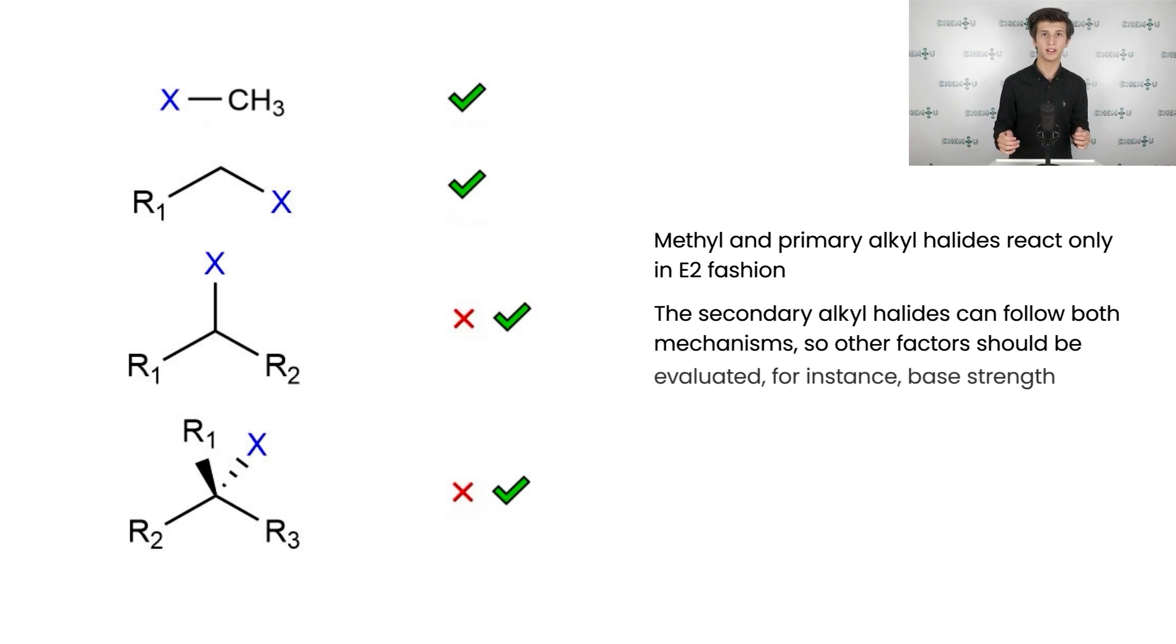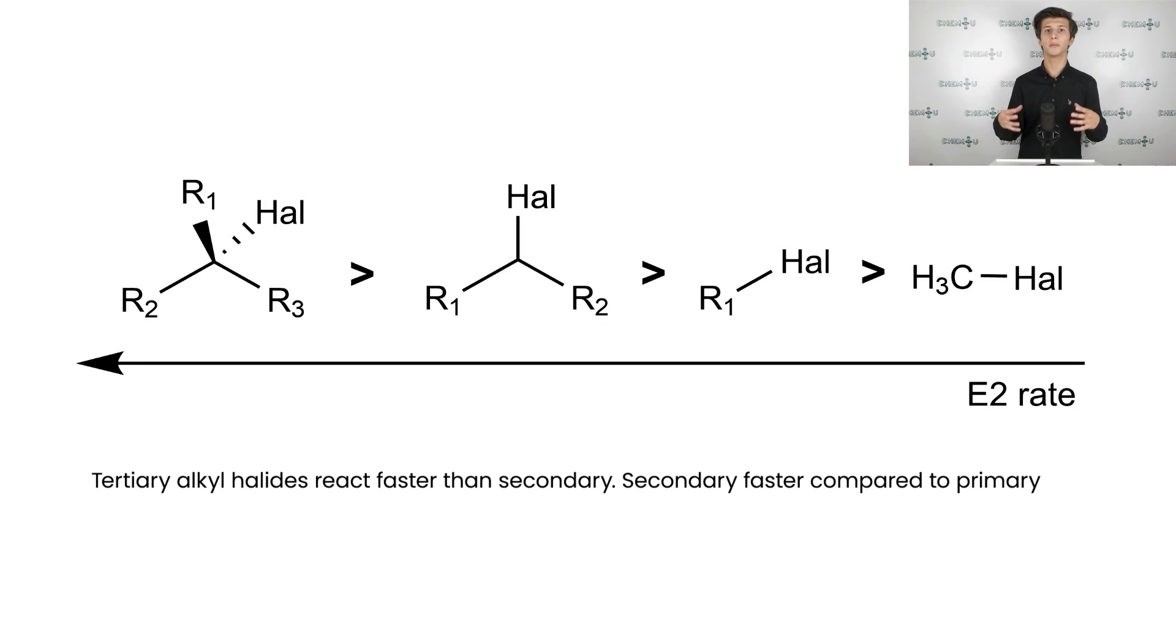The secondary alkyl halides can follow both mechanisms. In order to correctly predict mechanism for them, other factors should be taken into consideration, namely base strength. The same is true for tertiary alkyl halides. If we compare the rates of E2 elimination for tertiary, secondary and primary alkyl halides, we will notice that reaction rates decrease in this row.